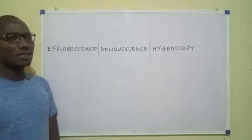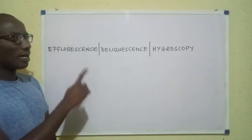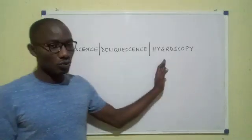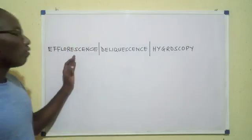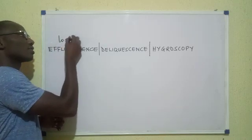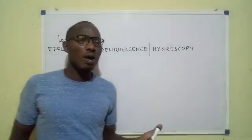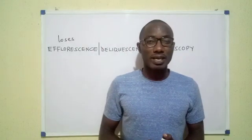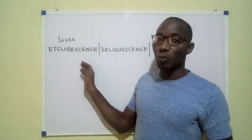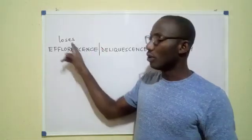What is an efflorescent substance? What is a deliquescent substance? And what does it mean to say that a substance is hygroscopic? An efflorescent substance is a substance that loses weight when exposed to the atmosphere. Why would it lose weight upon exposure to the atmosphere? Because it actually loses part of its water — what we call water of crystallization — to the atmosphere. So, by losing part of its water, it loses weight.